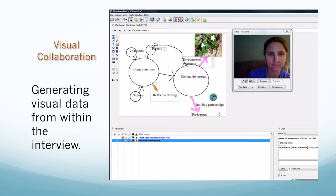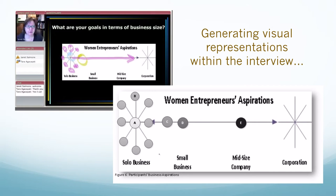Or we could do that same kind of generating of diagrams from within the interview using shared whiteboard tools in a web conferencing space, as is shown here. In this example, I started with a very basic continuum and asked participants where their aspirations fell along this continuum. And then when analyzing my data, I was able to put together a map that showed where all of the participants fell along that continuum.